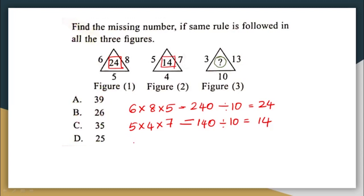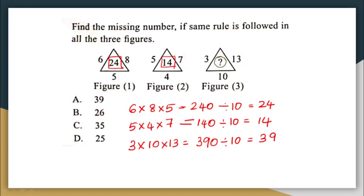Similarly, for the third figure: 3 × 10 × 13 = 390, and 390 ÷ 10 = 39. The missing number is 39, which is option A.